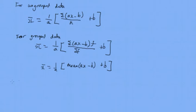Now top tip: sigma ax minus b can be rewritten as a sigma x minus nb, where n is the number of values.